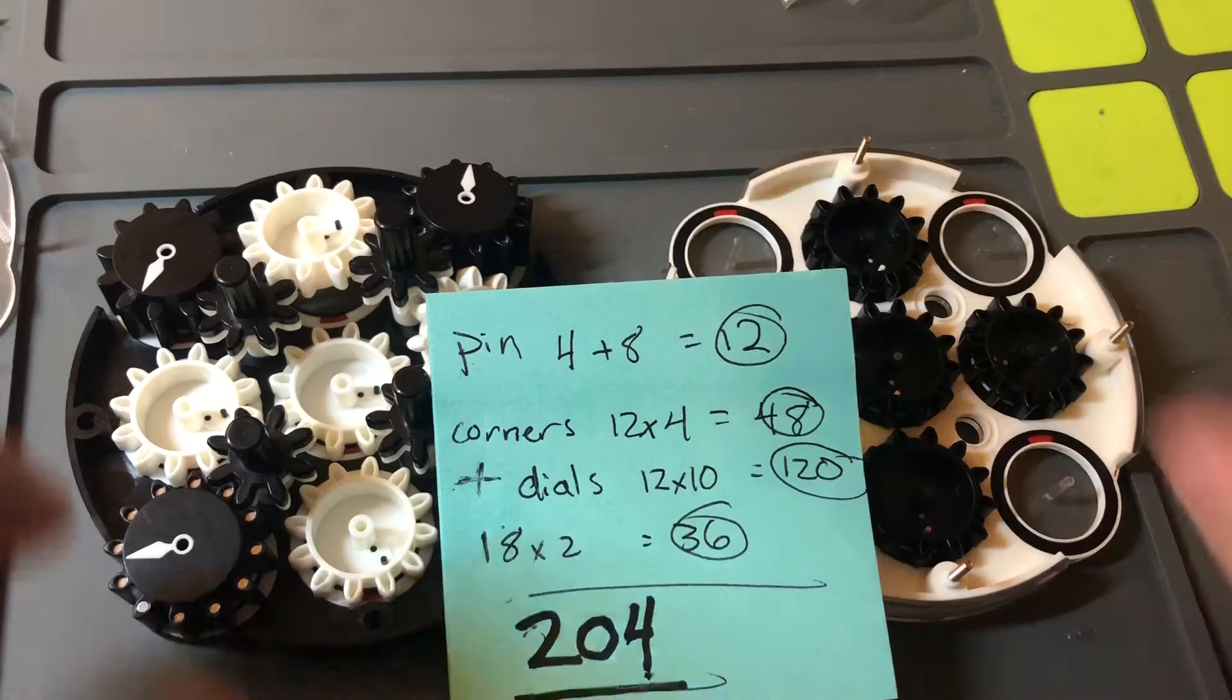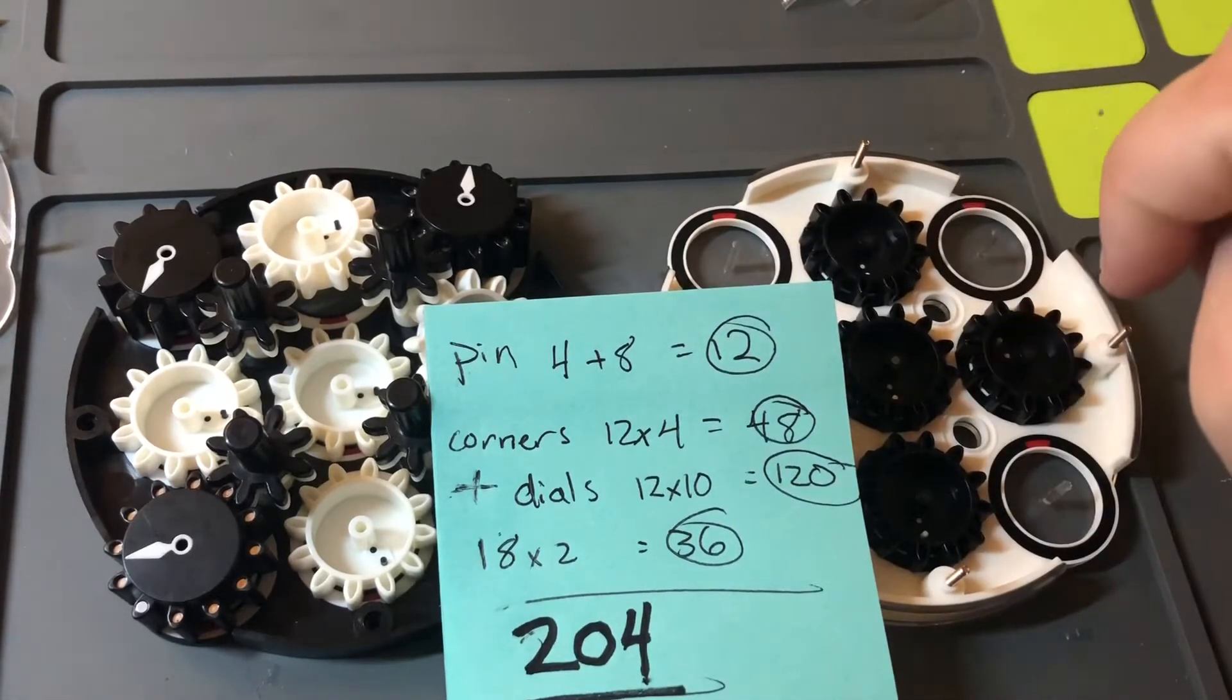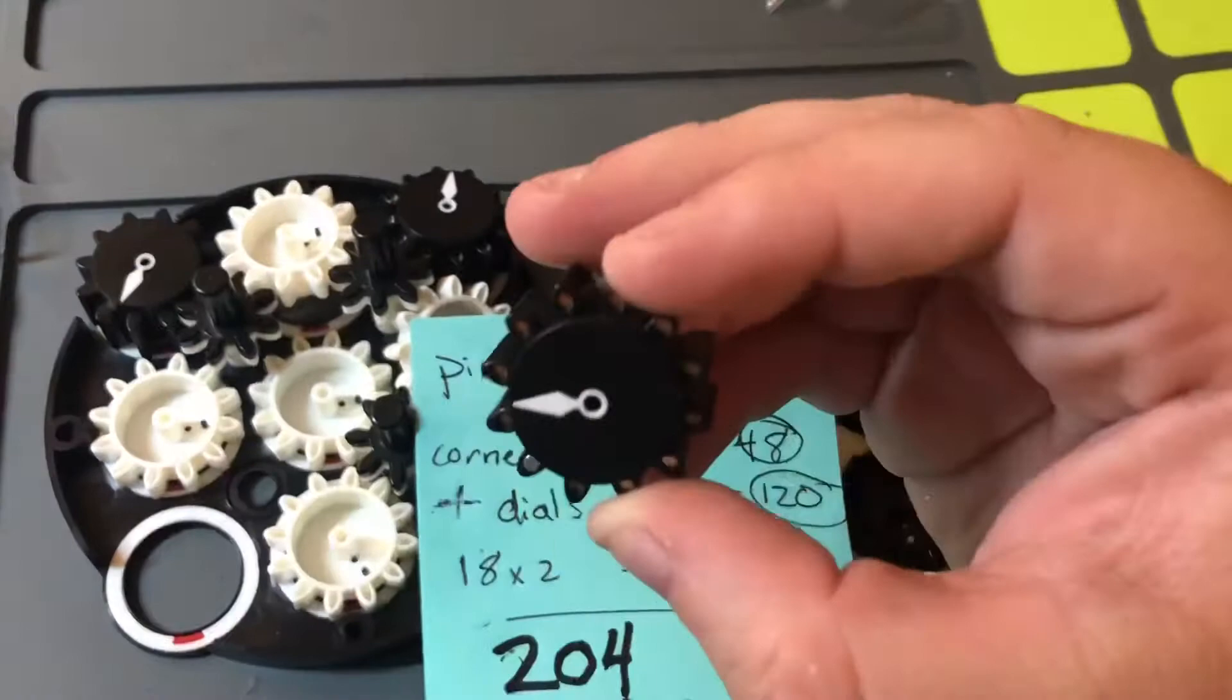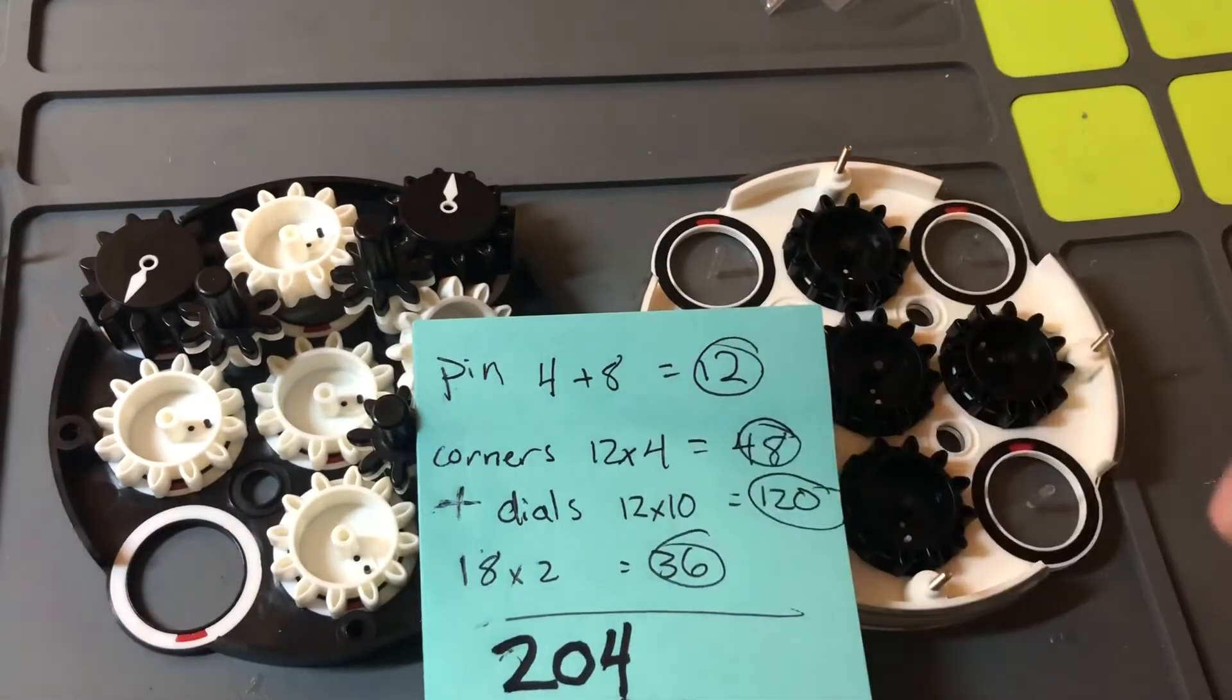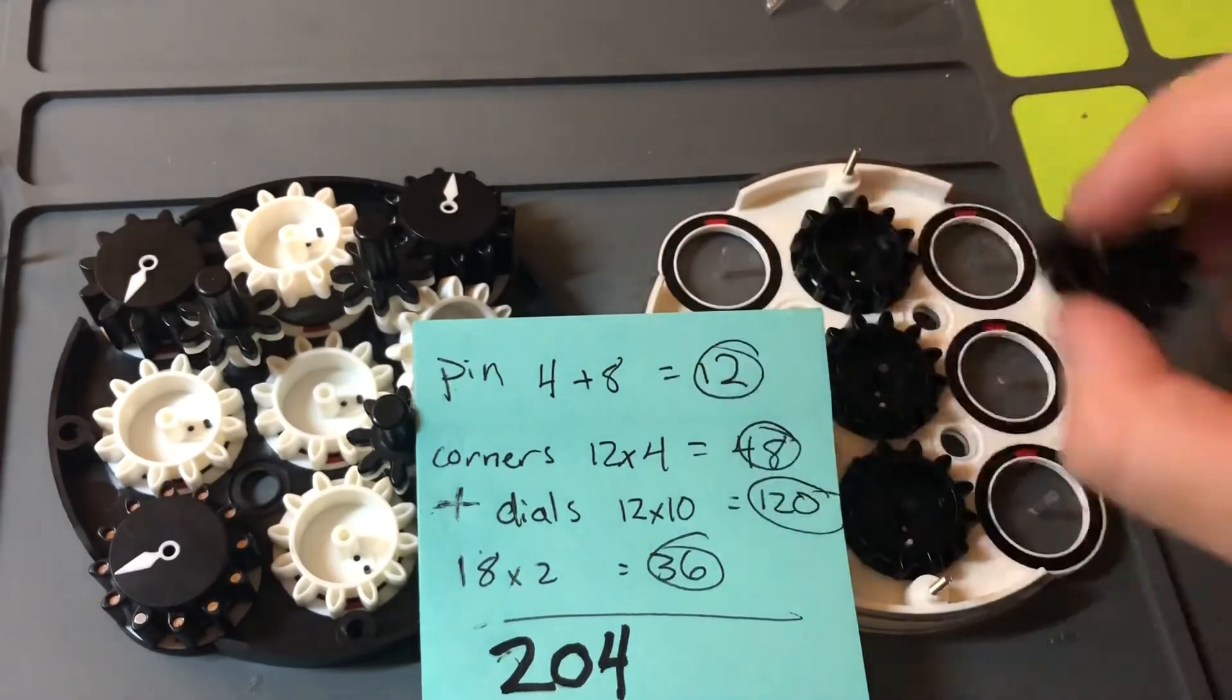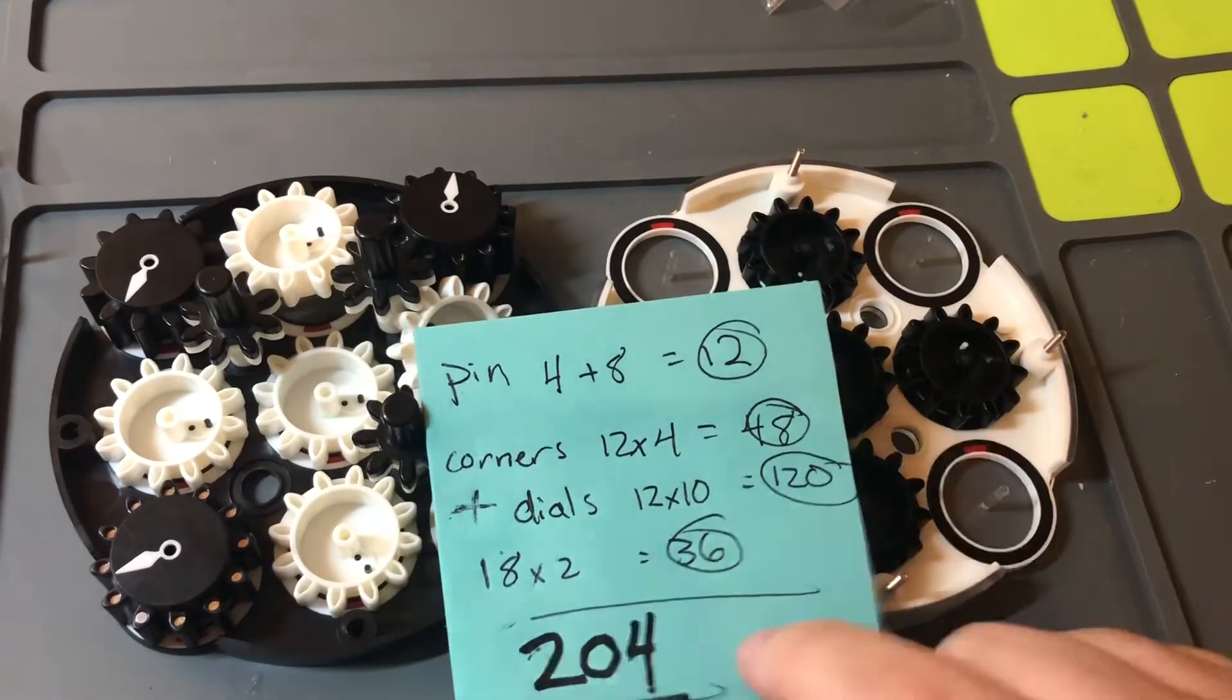In the pins, each of these pins have a magnet in them, so that's four. Each hole where it goes has a magnet, there's eight of those, so now we have 12. That's the pins. For the corners, one side has 12 magnets, there's four of those, so we get 48 for the corners. For the plus dials, every plus dial has 12 magnets, there are 10 plus dials, we get 120. And then there are 18 rings, each ring has two magnets, so 18 times 2 is 36. Adding that all up, we get 204 magnets.